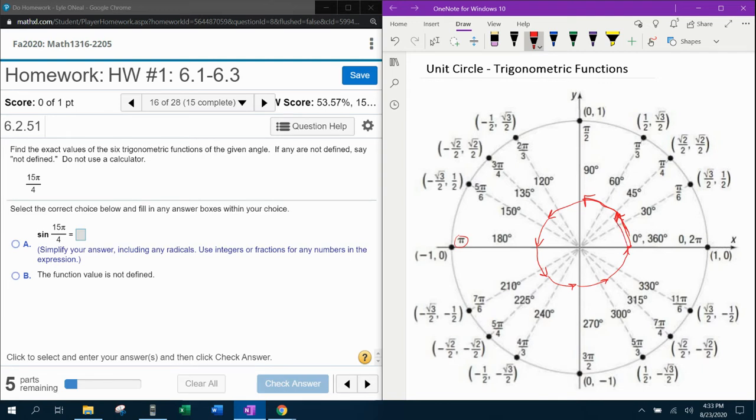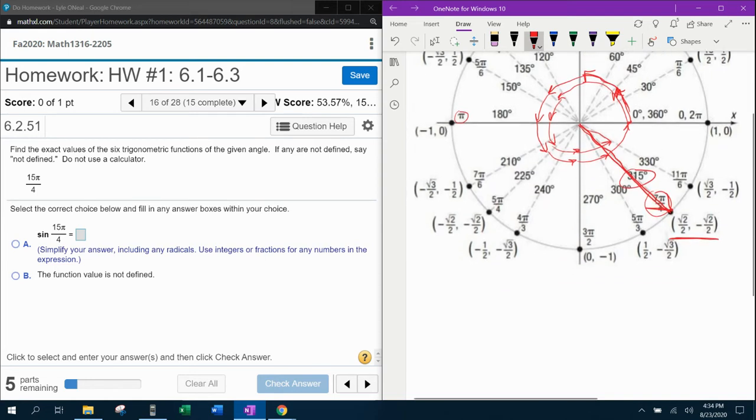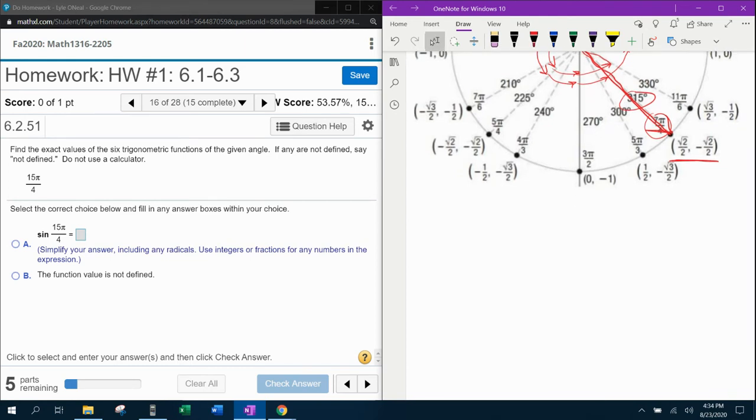There's 8, 9, 10, 11, 12, 13, 14, 15. So 15π over 4 is going to be equivalent to 315 degrees, which is equivalent to 7π over 4. The important thing is that's going to give us these values for x and y. This is our ordered pair that we're going to use for 15π over 4, and now we can actually work the problem.